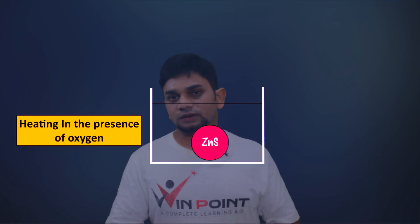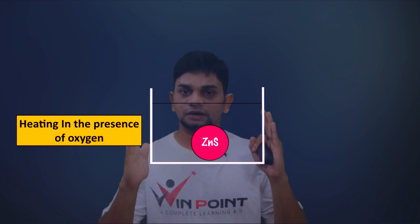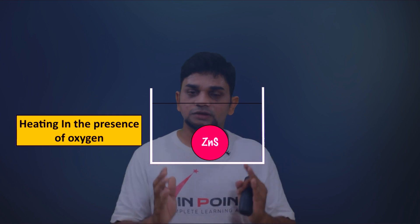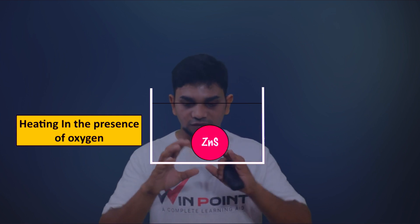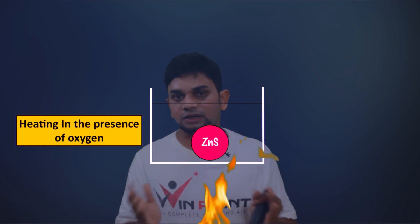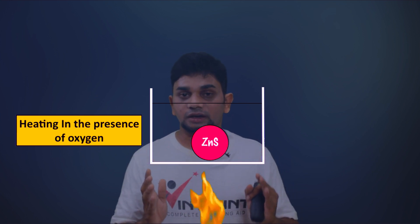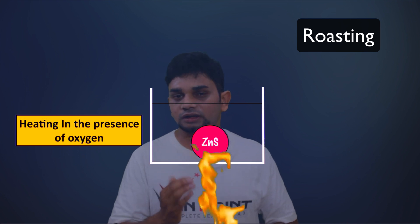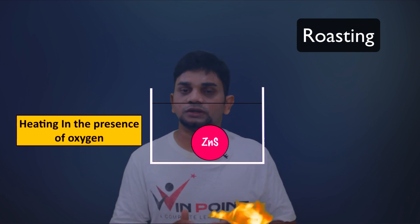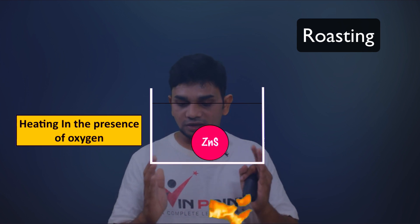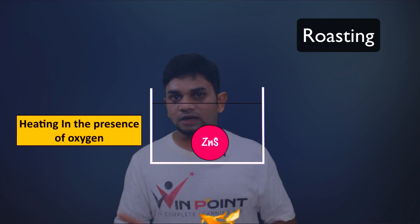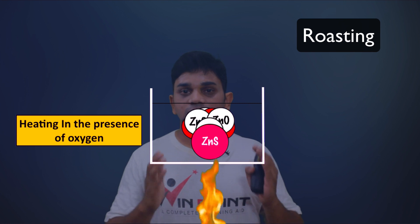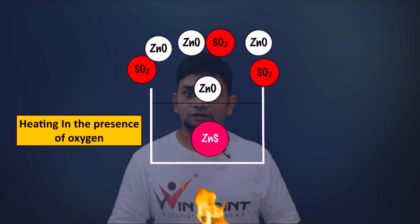First we are going to discuss zinc sulfide. When we heat zinc sulfide in the presence of oxygen, the process is known as roasting. If you are heating an ore in the presence of oxygen, that process is known as roasting. When we heat it, we get two products: zinc oxide and sulfur dioxide.